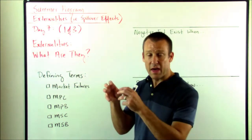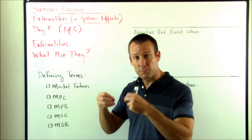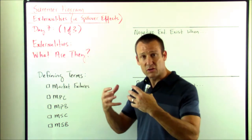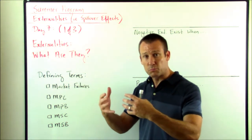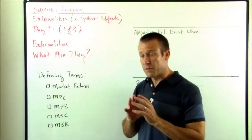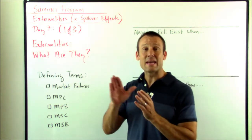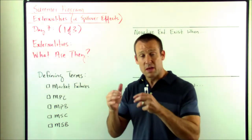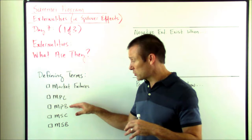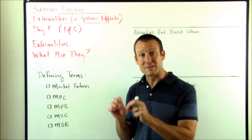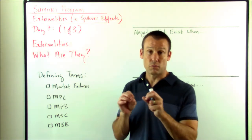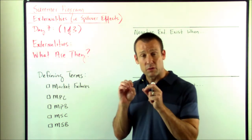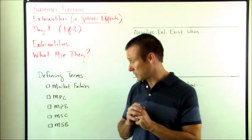Marginal Private Cost is the cost incurred by the producer when producing the good — it is the cost that they incur, just the producer. It is private to the producer and does not take into account any external cost or spillover cost. Marginal Private Benefit is the benefit going to the consumer. Marginal Private Benefit also does not consider any spillover cost or spillover benefit — it's only the benefit that the consumer is getting from consuming the good.